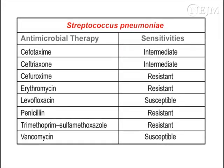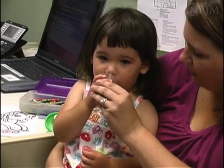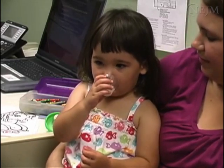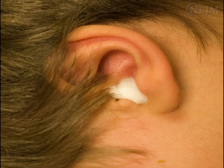Gram staining of the middle ear specimen, as well as the susceptibility pattern of the organisms isolated, should be used to guide antimicrobial therapy. The small tympanic membrane perforation made during tympanocentesis usually heals in approximately two to three days, and some serosanguinous drainage during this period is normal. A cotton ball coated with petroleum jelly should be used during bathing to keep water out of the child's external auditory canal for the first three days.